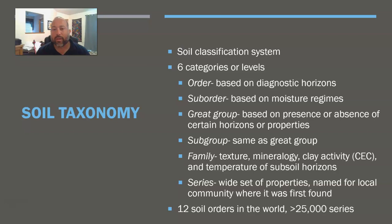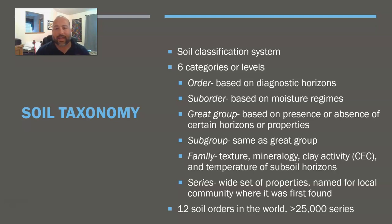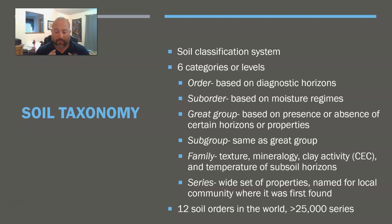The system we've come up with is soil taxonomy. It has six categories or levels, with our highest level being order and our lowest level being series. Order is going to be based on diagnostic horizons — meaning there's a specific property of the horizon that defines it.